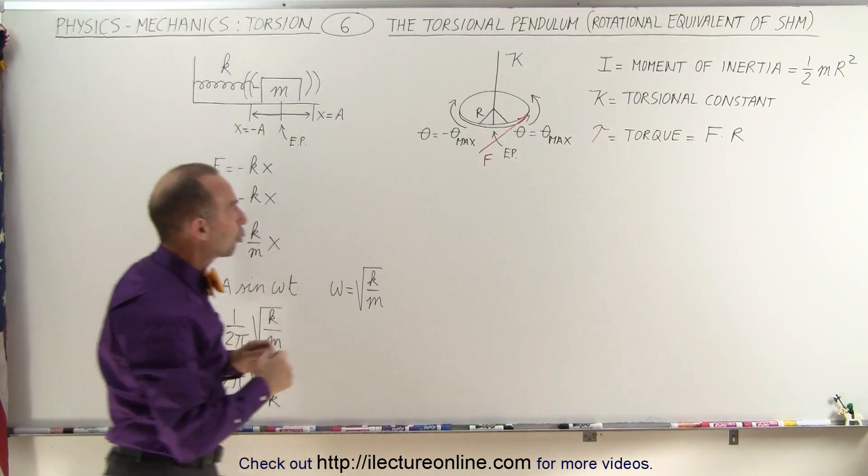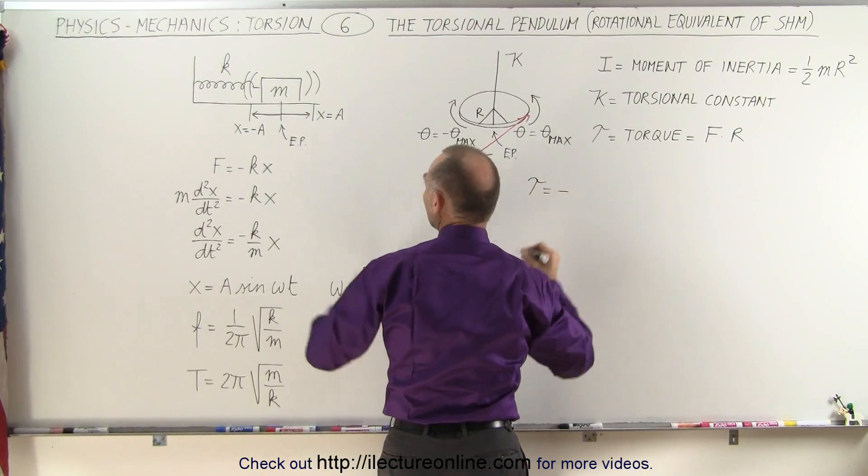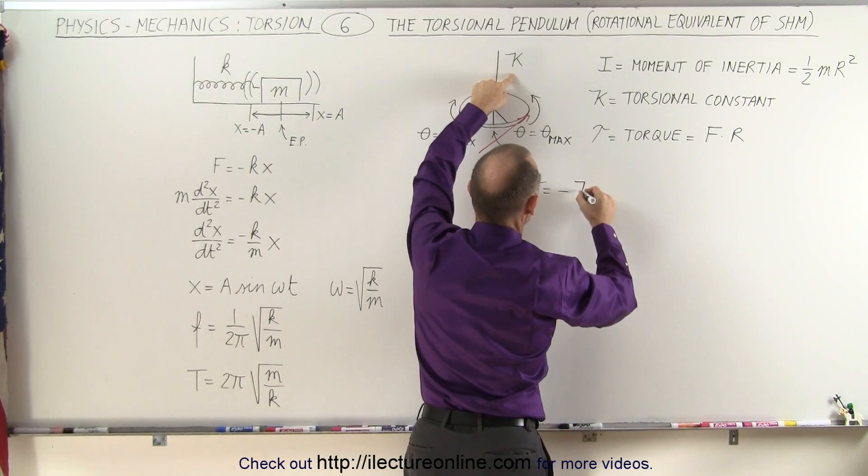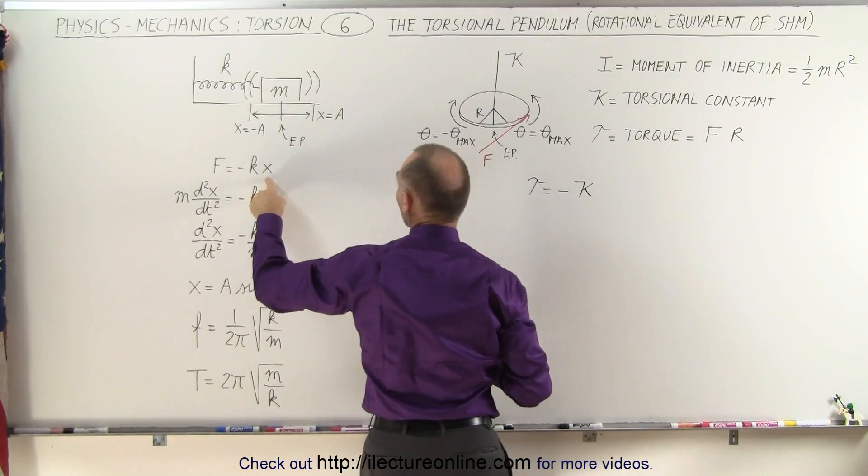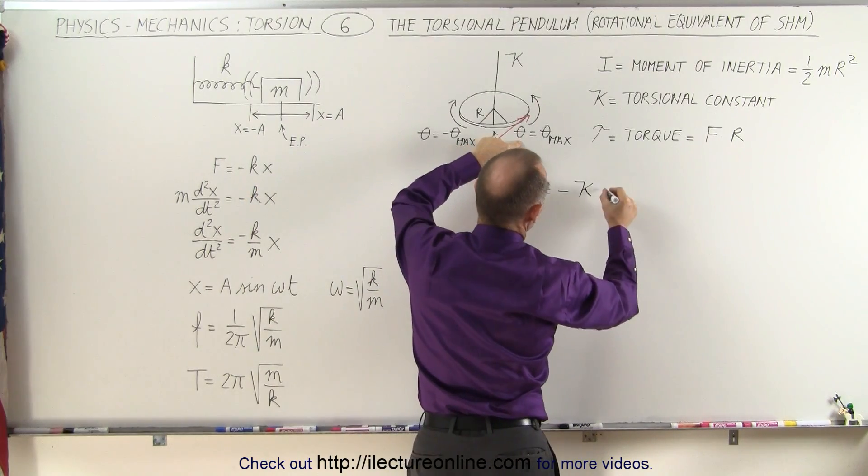Instead of f, we write the torque. The torque applied to this disc will be equal to the negative. Instead of the k of the spring constant, we use the torsional constant, kappa, times, instead of the linear displacement x, we use the angular displacement theta.